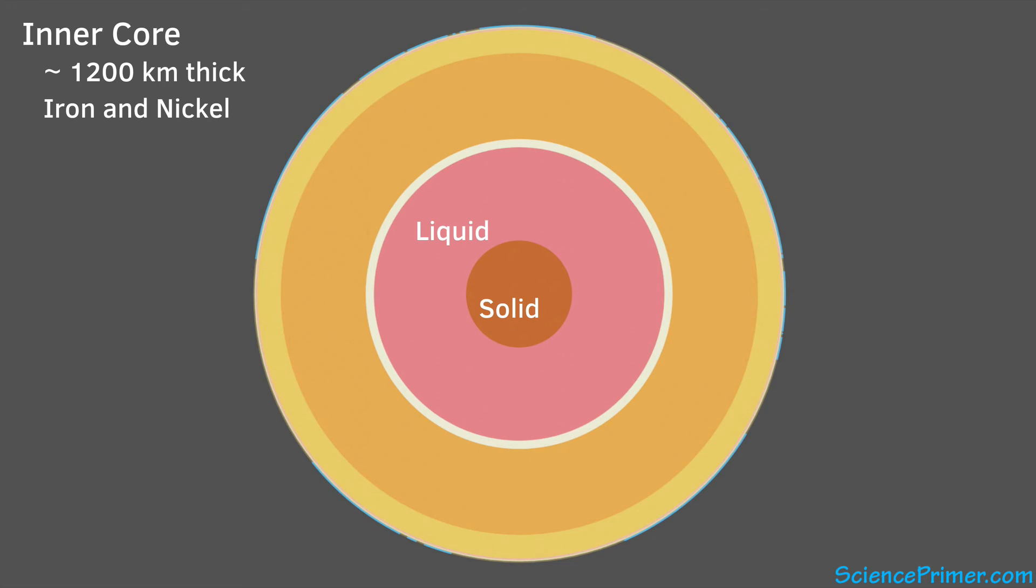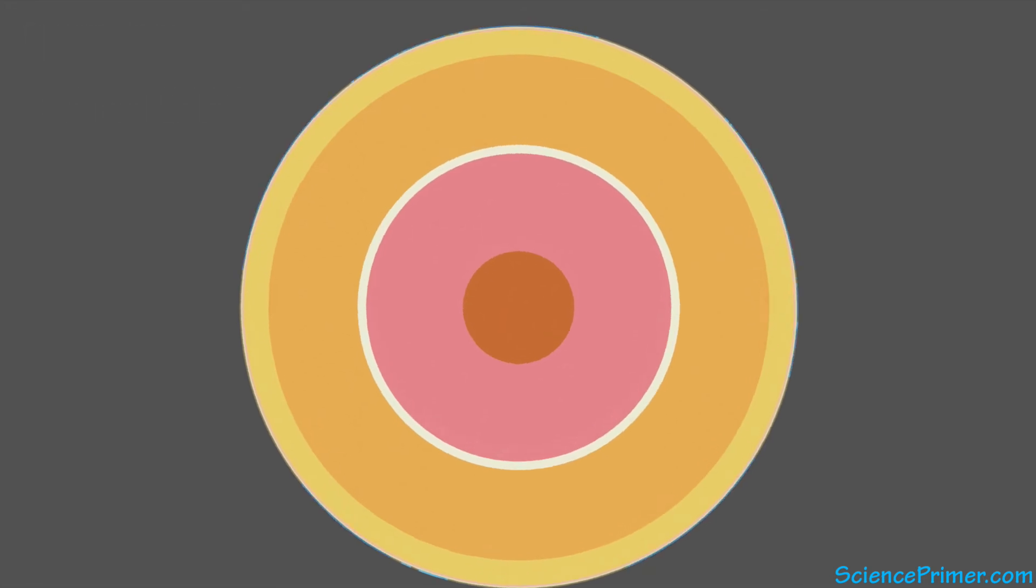When considering these regions, it is important to recognize that there is some overlap between them. Near the surface, a distinction is made between the crust and the mantle. This distinction is based on the mineralogy of the region, with the crust having more minerals containing the elements silicon and aluminum, and the mantle having, among other things, a greater abundance of magnesium-containing minerals.